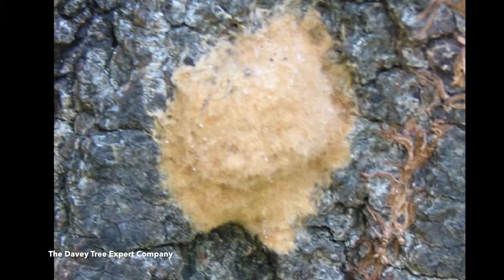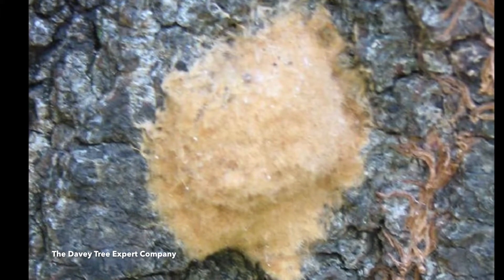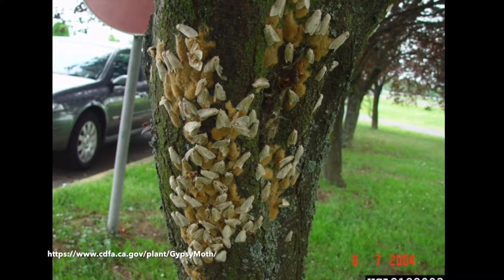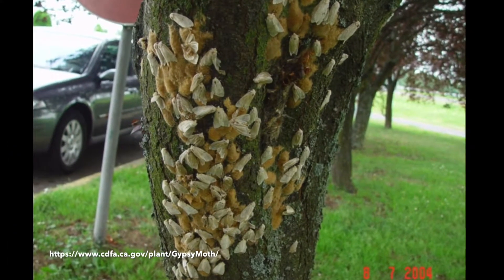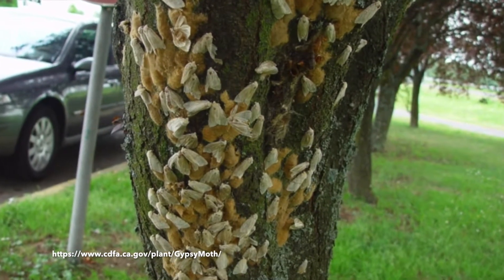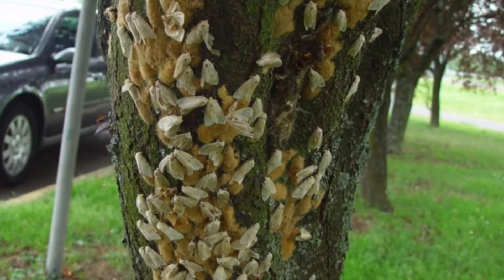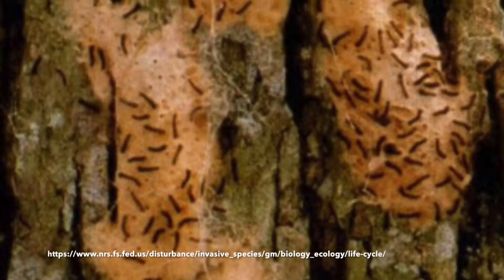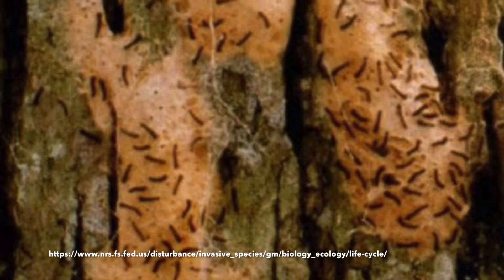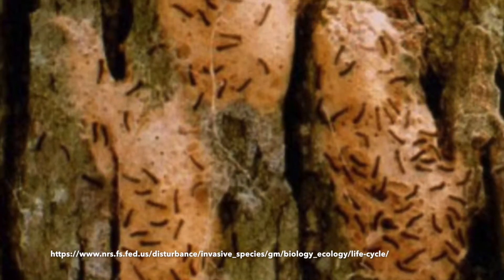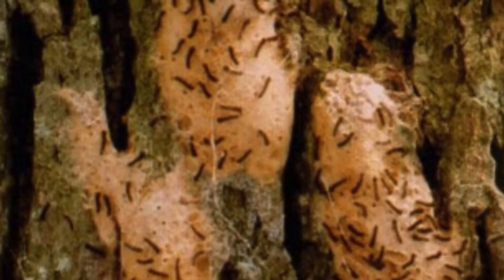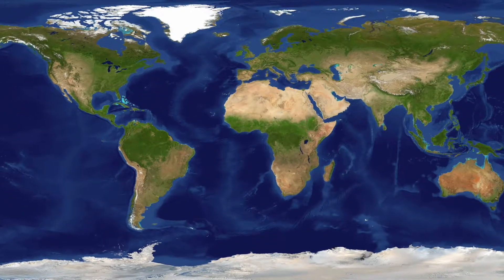Gypsy Moths overwinter as eggs, which are encased in a tan to dark brown hard egg mass cemented to trees or other objects. Each egg mass may contain 1,000 eggs. Eggs are laid in the summer and will hatch in the following spring. Upon hatching, the first instar larvae, if not on a preferred host plant, may spin a silken strand and go ballooning in the wind, an act that can carry it potentially long distances to a suitable host and even to a new geographic area.